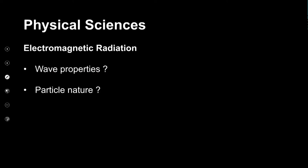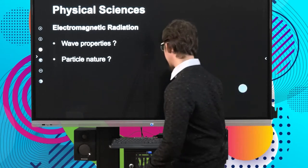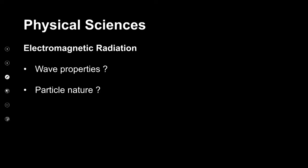As part of our investigation into electromagnetic radiation we have to ask ourselves: is electromagnetic radiation a wave or is it a particle? To better answer these questions we need to unpack the properties of waves and particles and relate them to electromagnetic radiation to make a decision. This question and this dual nature of electromagnetic radiation forms the basis of a lot of scientific debate and will form the basis of a lot of the investigative work we'll be doing in this section.